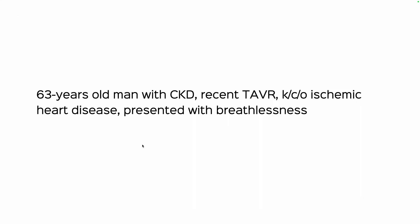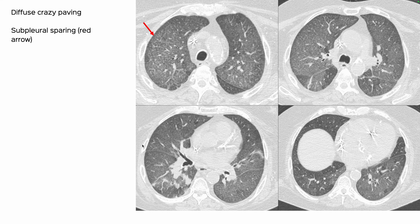This is a 63-year-old man with CKD, recent TAVR, known case of ischemic heart disease, presented with breathlessness. This appearance had been picked up on a CT five days ago. You have septal thickening, you have ground glass — you can see that here very well — and there is subpleural sparing as this red arrow shows.